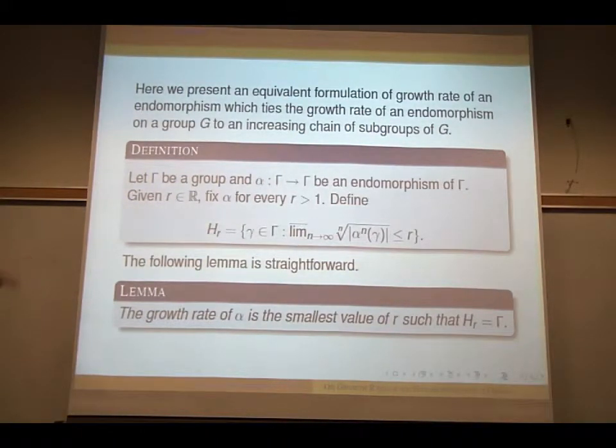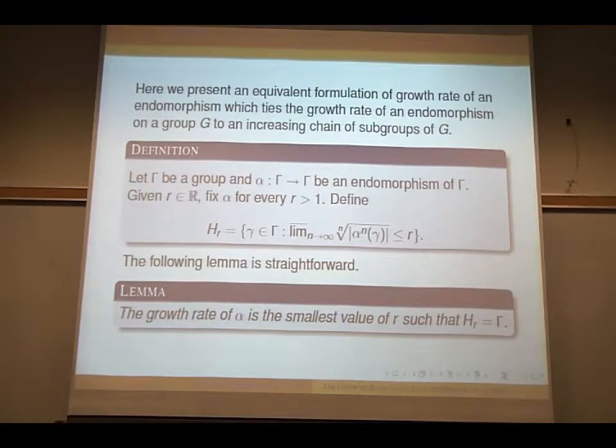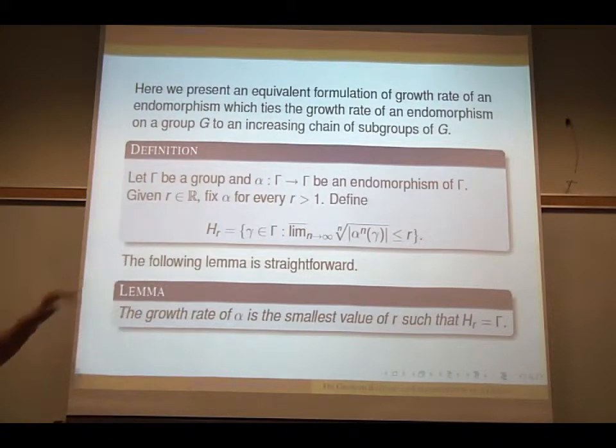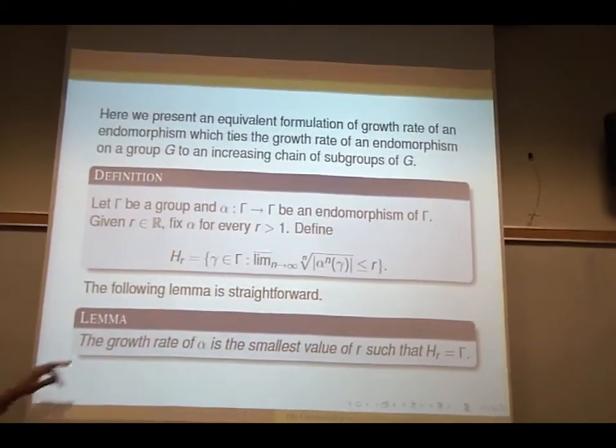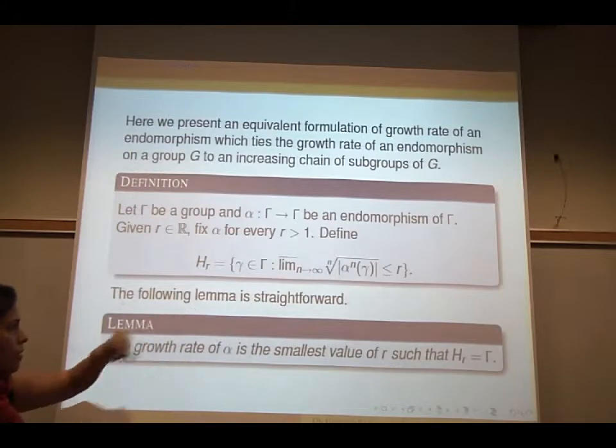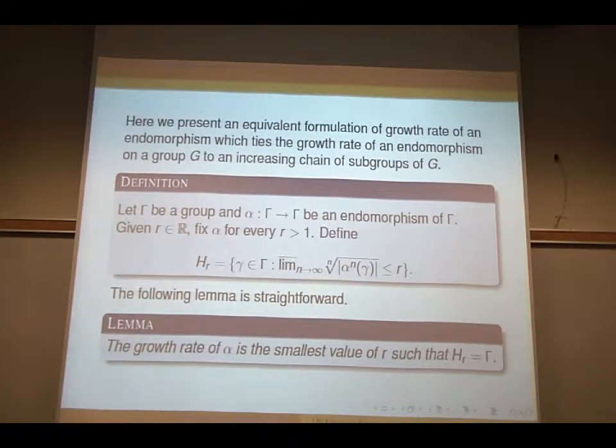So here's the definition. Again, suppose gamma be a finitely generated group, alpha is an endomorphism. And now given R, a real number, fix this endomorphism and define H_r to be the set of elements gamma in Gamma, such that this supremum of the n-th root of the length of alpha^n(gamma) is less than or equal to R.